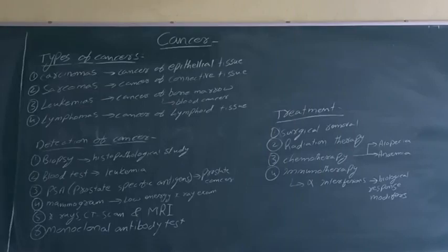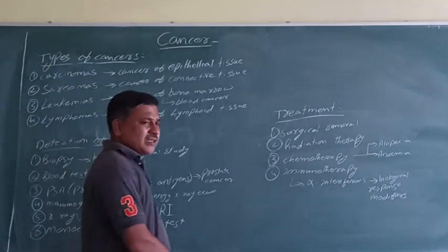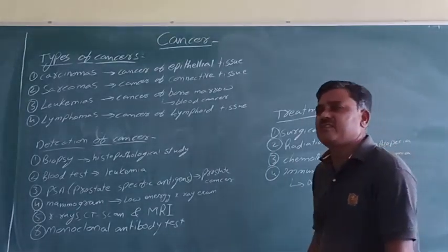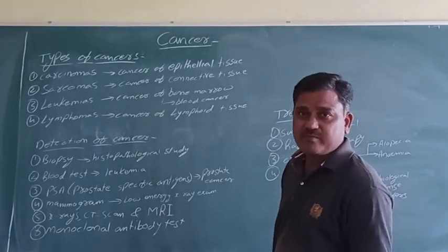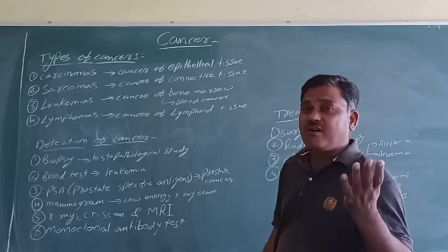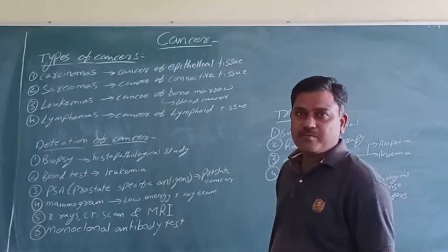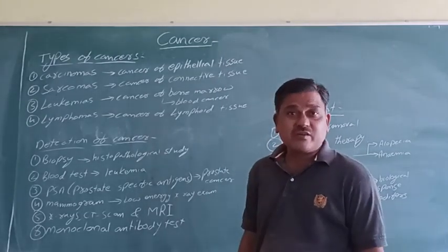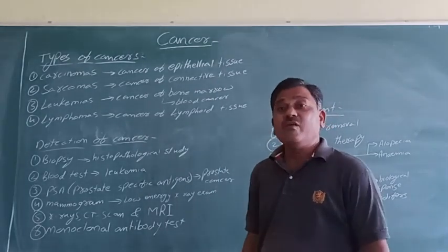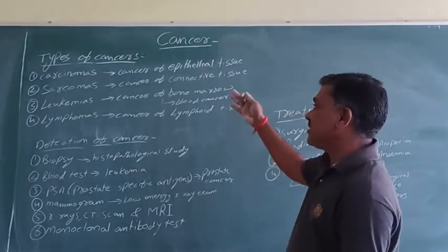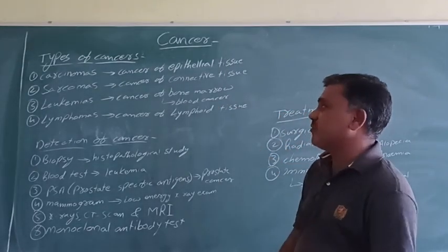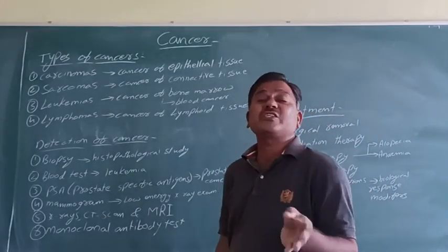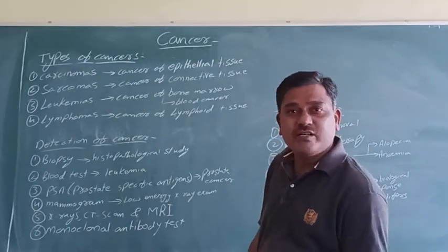Next point: the types of cancer — benign tumor, pre-malignant tumor, and malignant tumor. These are the types of tumors depending on whether they are harming our body or not. But the cancers — the tumors — depending on where they are appearing and where they are affecting, we are differentiating these cancers into four types. Here we are taking the example of tissues in which there is occurrence of cancer.